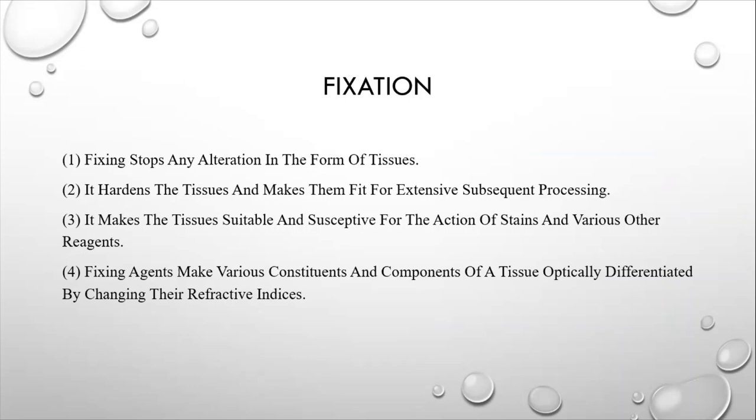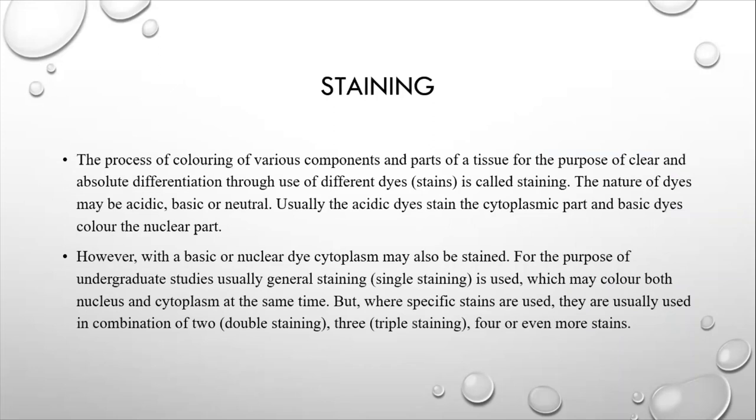Staining. The process of coloring of various components and parts of a tissue for the purpose of clear and absolute differentiation for use of different dyes or stains is called staining. The nature of dyes may be acidic, basic, or neutral. Acidic dyes stain the cytoplasmic part. Basic dyes color the nucleotide. However, basic or nuclear dye may stain the cytoplasm.